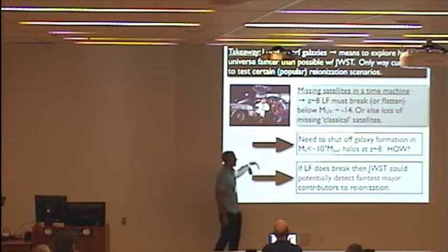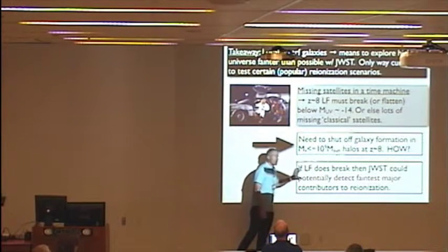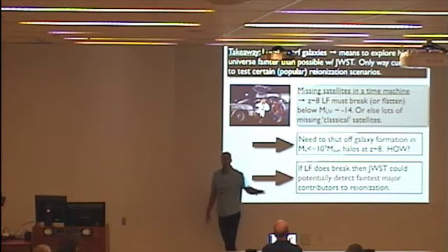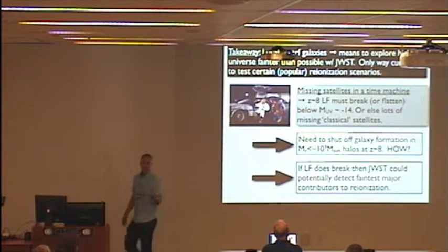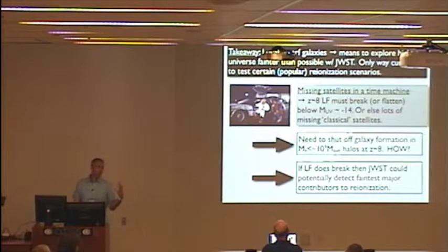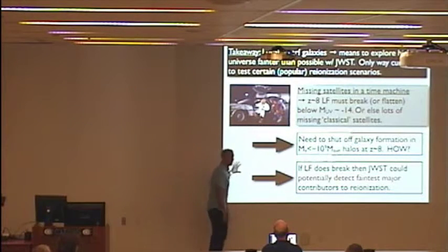And if this break does happen, then it's kind of nice if you think about what JWST will actually be able to directly detect. JWST could in principle then be directly detecting the sources, at least the galaxy sources that are contributing primarily to UV flux. So, okay, that's it. Thank you.